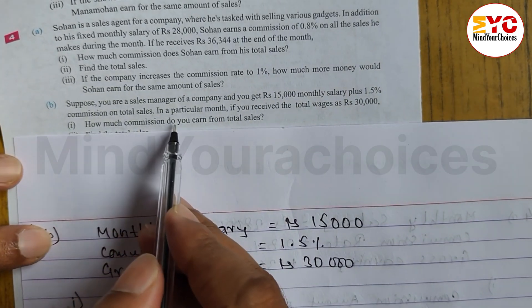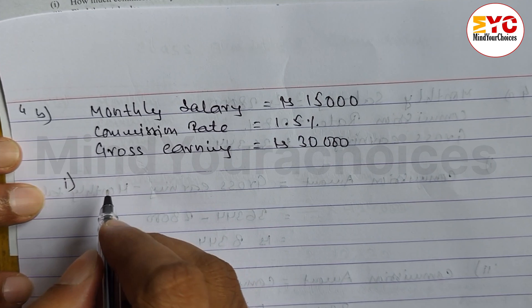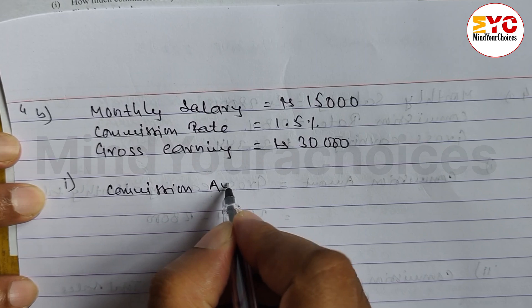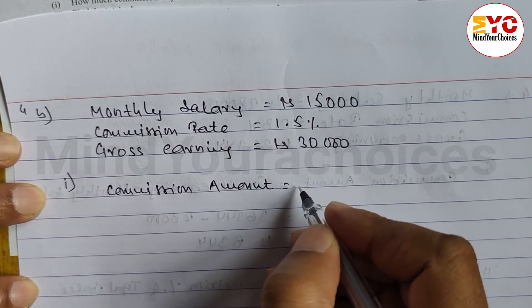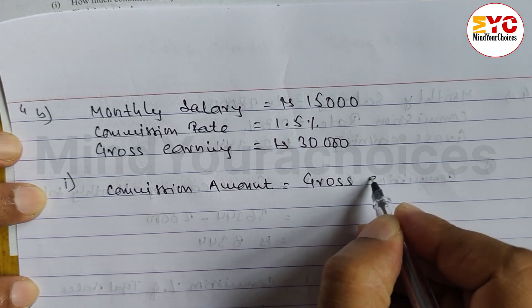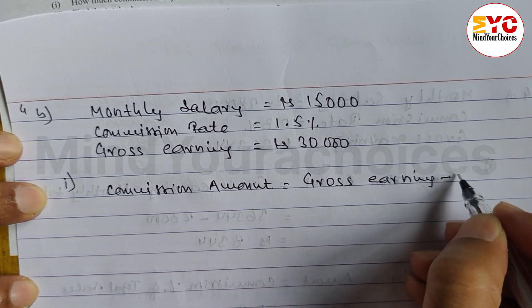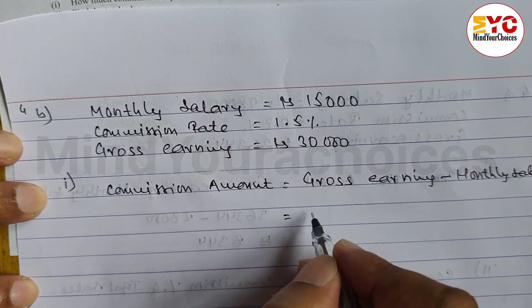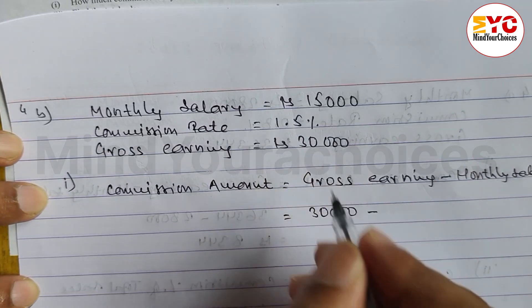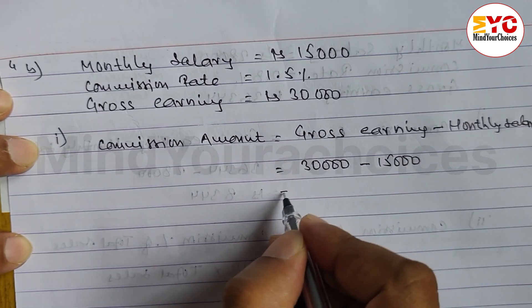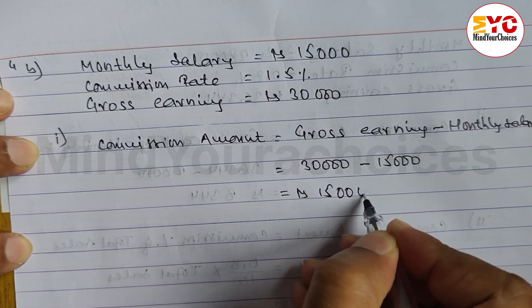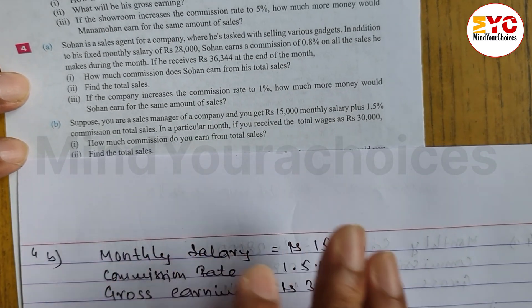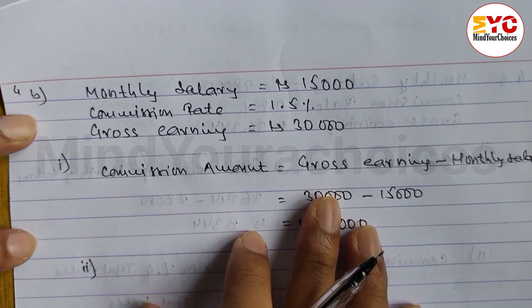Question 1: How much commission do you earn from total sales? Commission amount equals gross earning minus monthly salary. Gross earning is Rs. 30,000 and monthly salary is Rs. 15,000. So 30,000 minus 15,000 equals Rs. 15,000. The commission amount is Rs. 15,000.